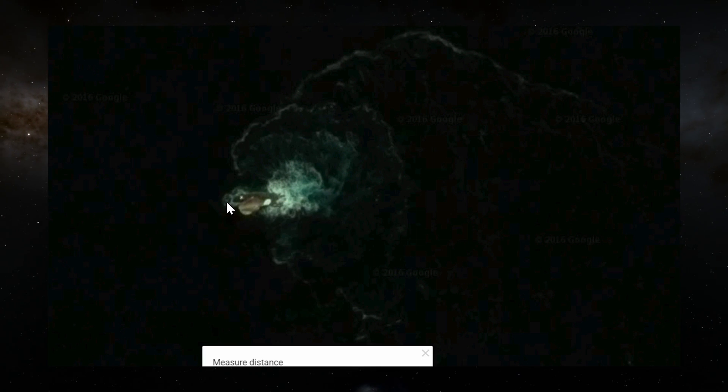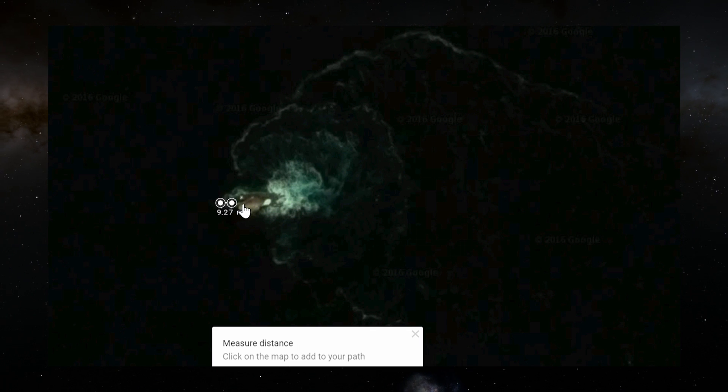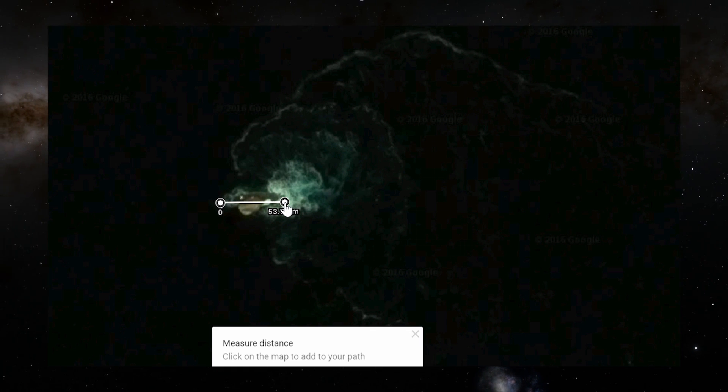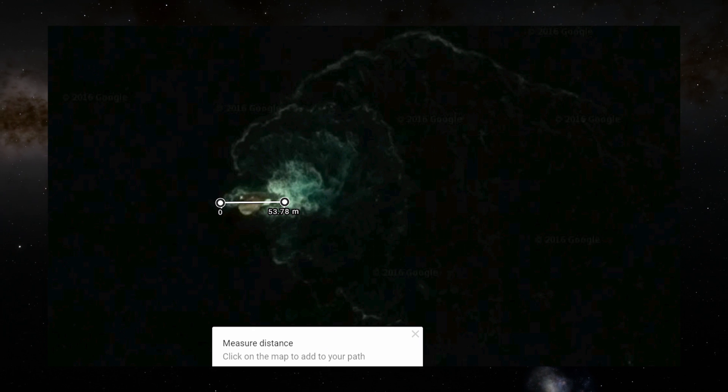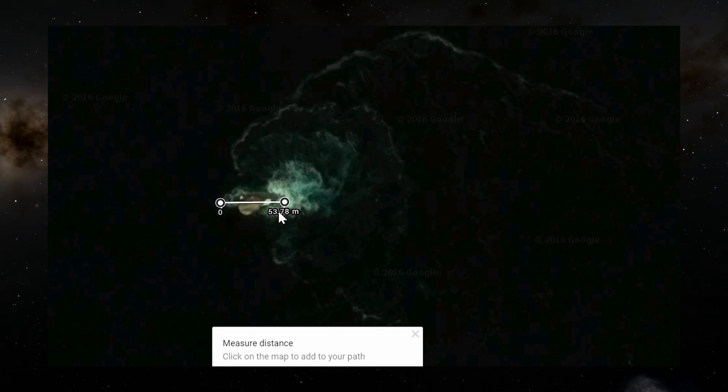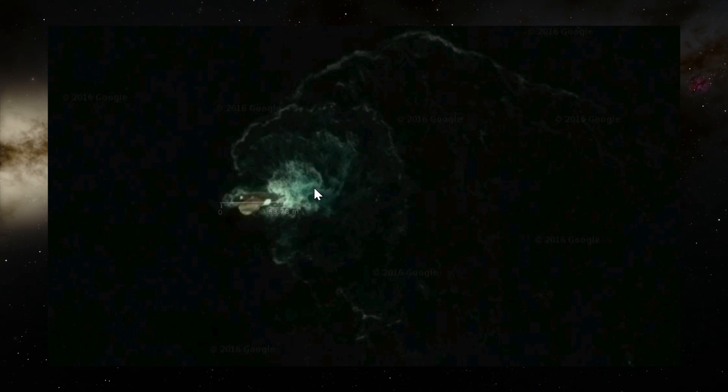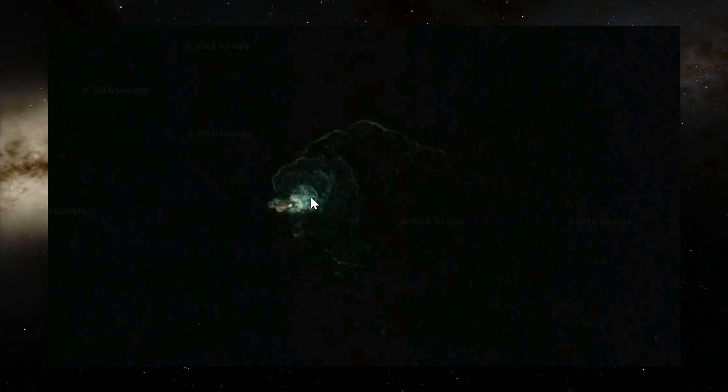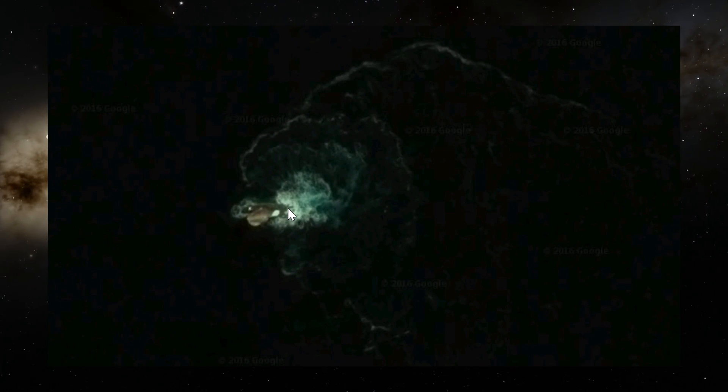Measure distance. The size of that thing is almost or over 50 meters long, or 150 feet, 170 feet as a matter of fact. That is a pretty large object, whatever that is. It's a pretty large object, and it's not very far off from where the original Bloop was.